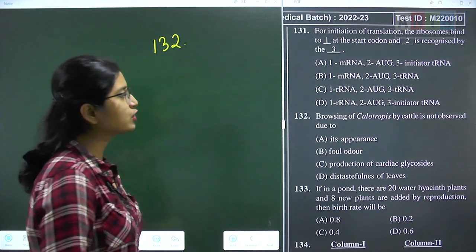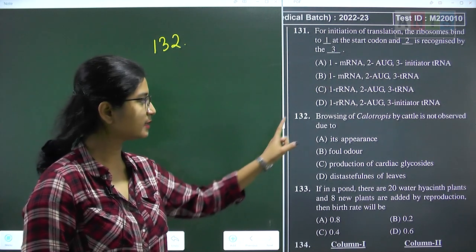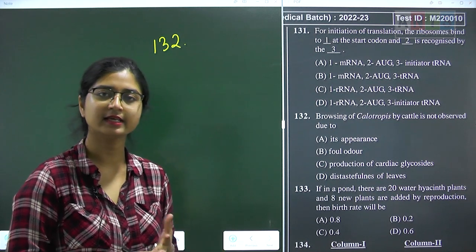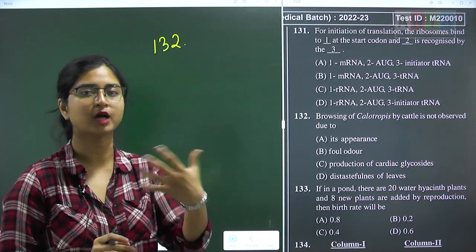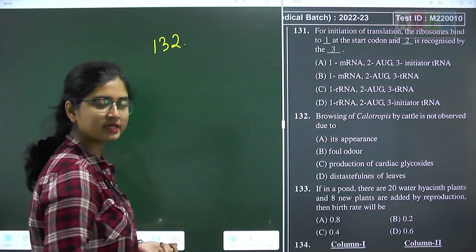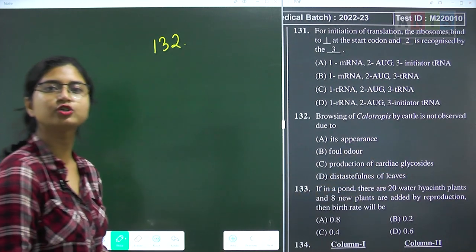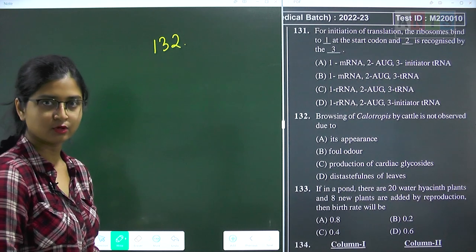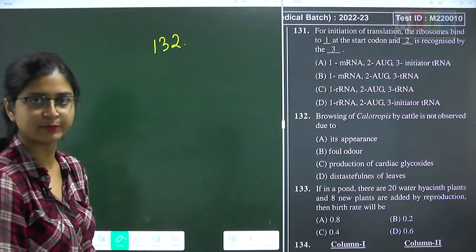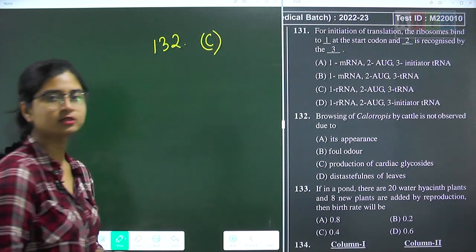Question 132: browsing of calotropis by cattle is not observed due to? Calotropis contains a class of very toxic compounds called cardiac glycosides. Cattle do not want to consume cardiac glycosides because it is harmful for them. Question 132 answer is option C.